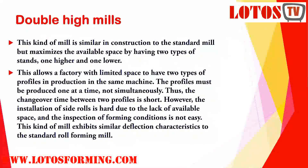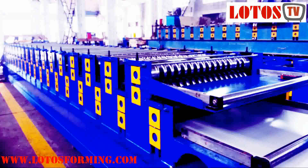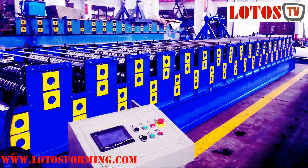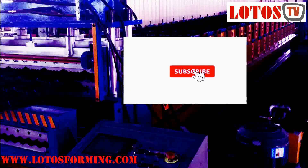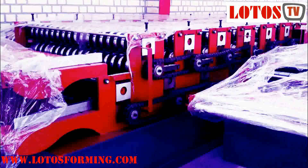Now we are going to double high mills. This kind of mill is similar in construction to the standard mill, but maximizes available space by having two tiers of stands stacked higher in one level. This allows a factory with limited space to have two types of profiles in production on the same machine, though the profiles must be produced one at a time, not simultaneously. The changeover time between two profiles is short; however, installation of side walls is difficult due to limited available space, and inspection of forming conditions is not easy.